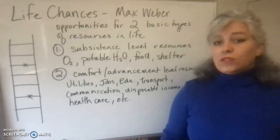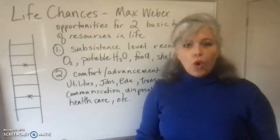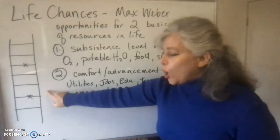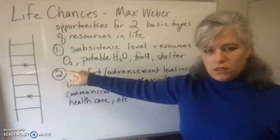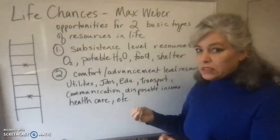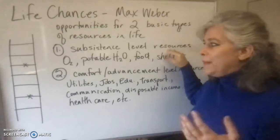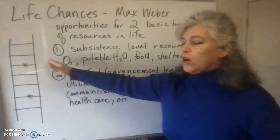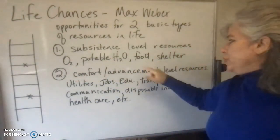Some people down low on this ladder over here, with the different rungs representing different socioeconomic levels — which is the combination of three achieved statuses: income, occupation, and education — if you're low on those resource levels, then you might have only a subsistence level of resources in order to survive from day to day. If you are a US citizen, maybe you won't have life-threatening limits to subsistence level resources, but you are probably closer to only being able to afford subsistence level resources — just oxygen, potable water, food, and shelter.